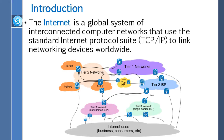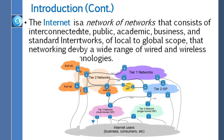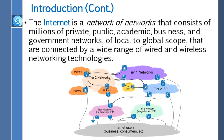The Internet is a global system of interconnected computer networks that use the standard Internet Protocol Suite to link networking devices worldwide. The Internet is a network of networks that consists of millions of private, public, academic, business and government networks of local to global scope that are connected by a wide range of wired and wireless networking technologies.